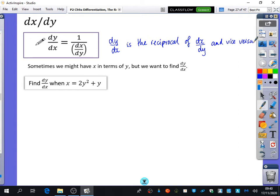Why might we need to use this? Well, sometimes we might have x in terms of y, but we want to find out what dy/dx is. So this particular question that I've got here, it says find dy/dx when x is equal to 2y squared plus y.